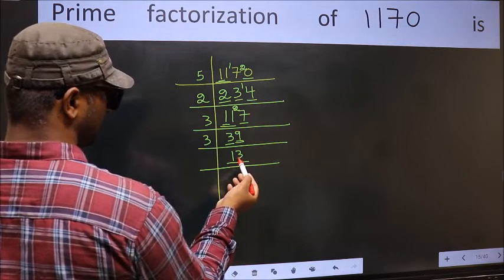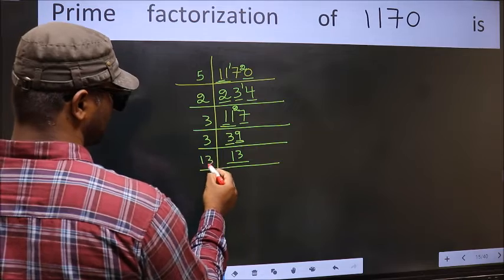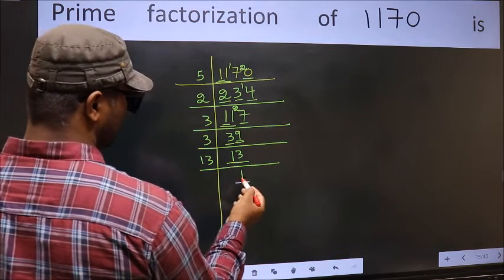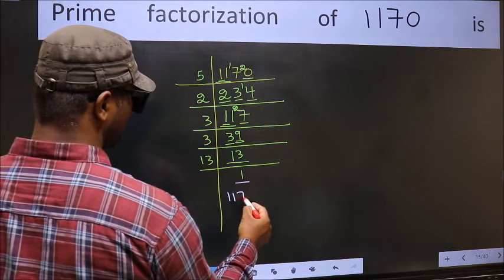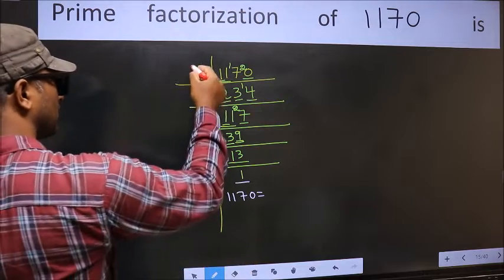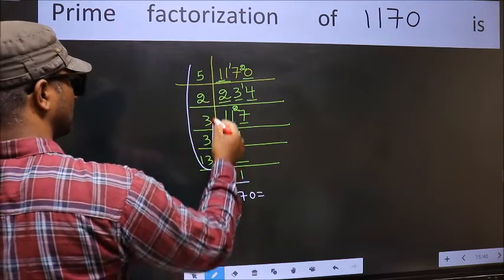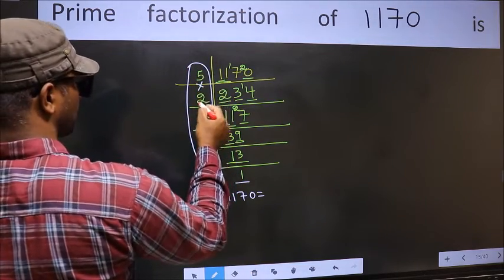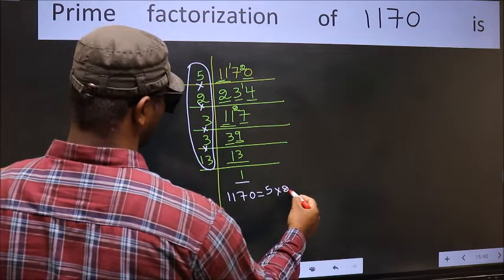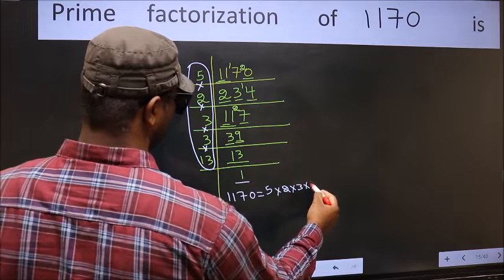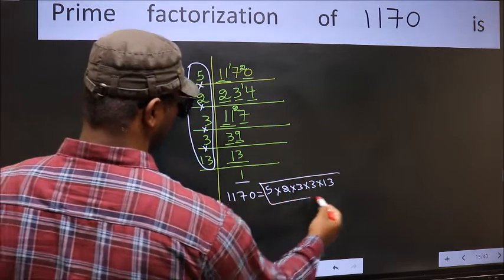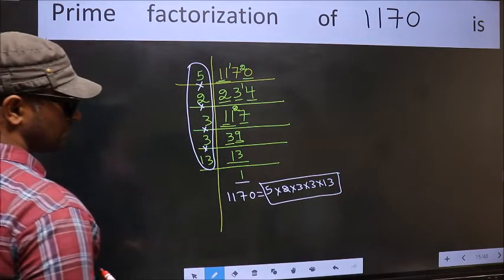Now here we have 13. 13 is a prime number, so 13 times 1 is 13, giving us 1 here. So the prime factorization of 1170 is the product of these numbers: 5 times 2 times 3 times 3 times 13. So this is the prime factorization of 1170.